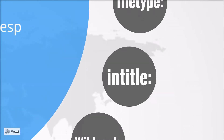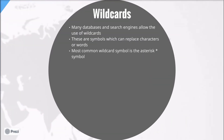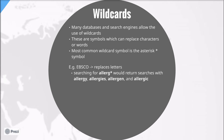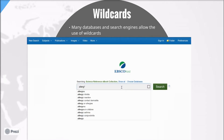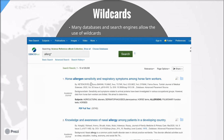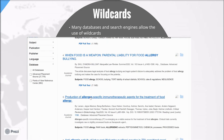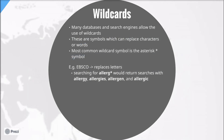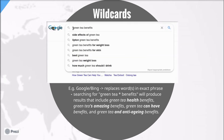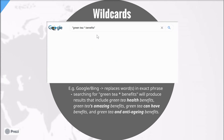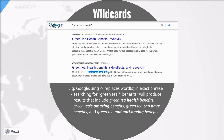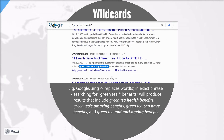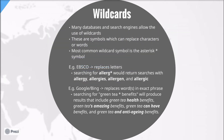Finally, wildcards. Many databases and search engines allow the use of wildcards, and these are symbols which can replace characters or whole words. The most common symbol used as a wildcard is the asterisk, which can be used in online databases as well as search engines, although these two treat wildcards in different ways. For online databases such as EBSCO, the wildcard replaces letters — so for example, searching ALLERG* would return results with allergy, allergies, allergen and allergic. Wildcards are much less useful for online search engines, where the wildcard replaces a word in an exact phrase — so searching for "green tea * benefits" would return results like green tea health benefits, green tea's amazing benefits, green tea can have benefits, and green tea anti-aging benefits.